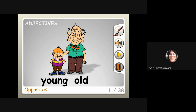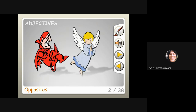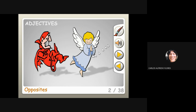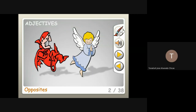The opposite of young is old. You see a young person and an old person. Now, what about bad? Yes — bad, and the opposite of bad is good.